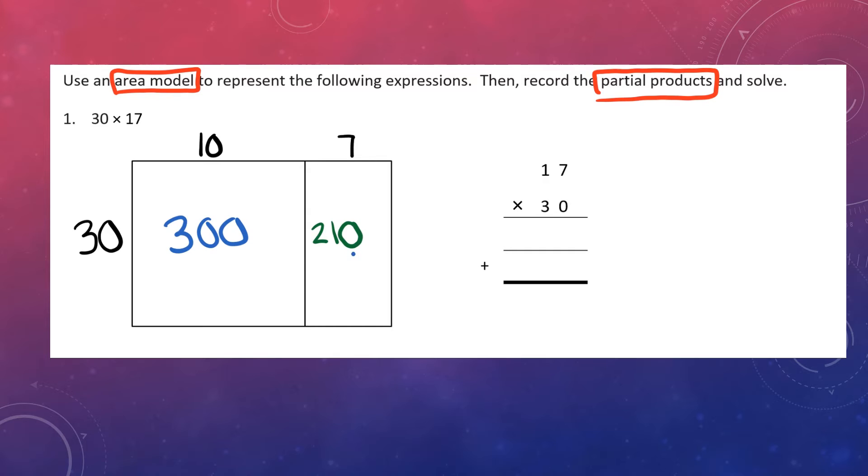So 300 and 210 are my partial products. Product is the answer to multiplication, and so I have two answers to multiplication, and they are the parts that I will put together to get my final product, my final answer. So I am going to put my parts on the line, 300 and 210, and now what I have to do is add together my parts to get my final product. So my final answer is 310.